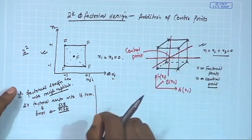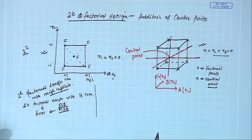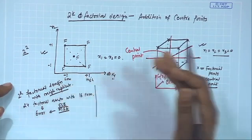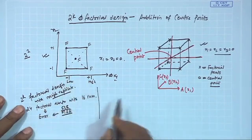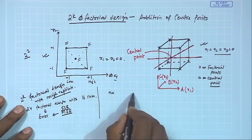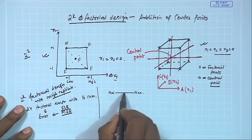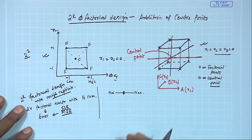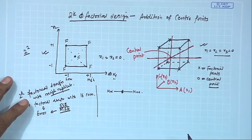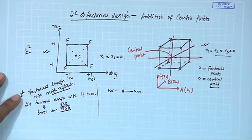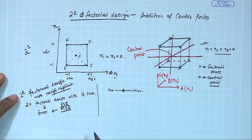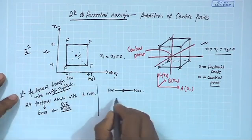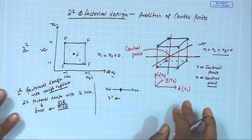An important advantage is that the center point is where the process is most commonly run — it is the most familiar condition for the production system. We typically define high and low as maximum and minimum, and operators tend to set the process at the midpoint. Additionally, in a 2 to the power k factorial design we assume the response surface is linear.